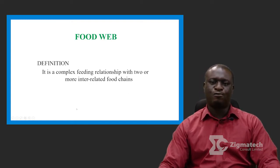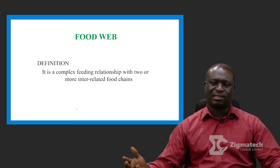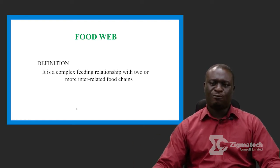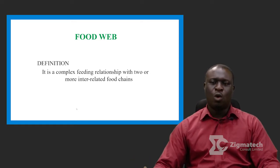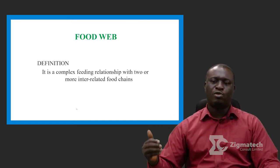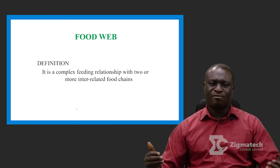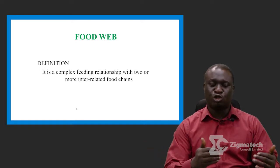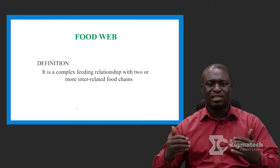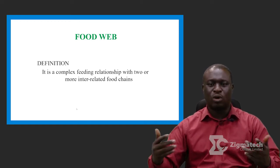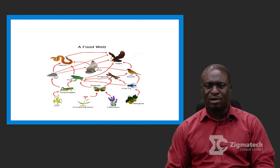Moving to the next is food web. Food web and food chain are similar. The definition of a food web is that it is a complex feeding relationship with two or more interrelated food chains. The major difference between a food chain and a food web is that a food web consists of more than one food chain, as shown in the diagram.